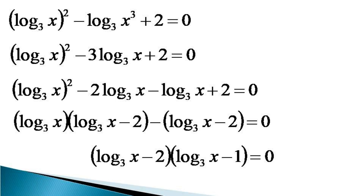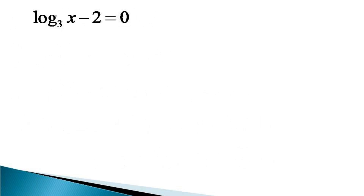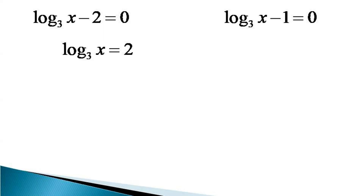This gives us two solutions: log of x to the base 3 minus 2 equals 0, and log of x to the base 3 minus 1 equals 0. For the first condition, log x to the base 3 equals 2, and from the definition of log, x equals 3 squared, so x equals 9.